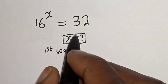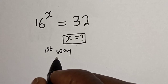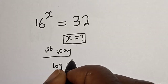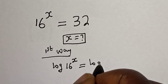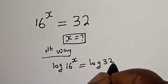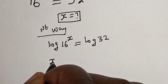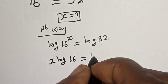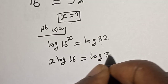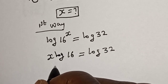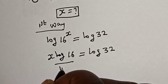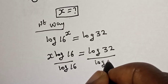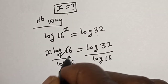The first way: we have 16 raised to power s is equal to 32. Let's take the log of both sides — that is, log 16 raised to power s is equal to log 32. This gives us s log 16 is equal to log 32. Now let's divide both sides by log 16.